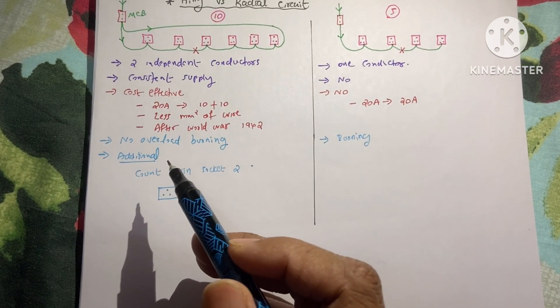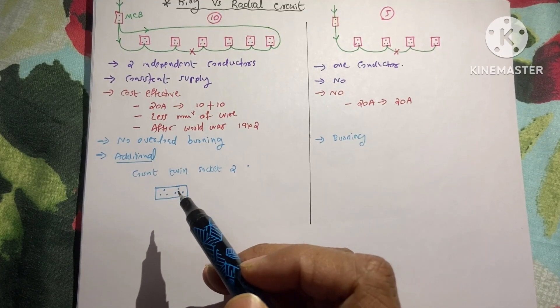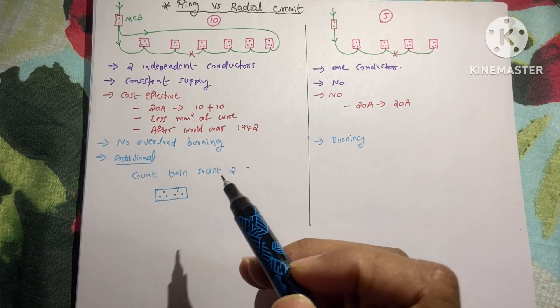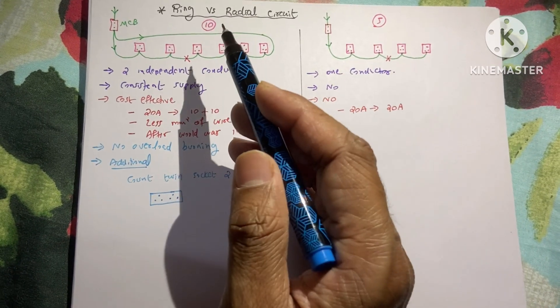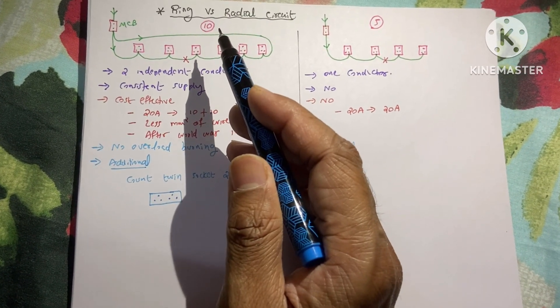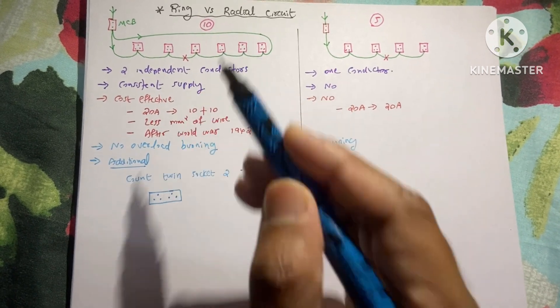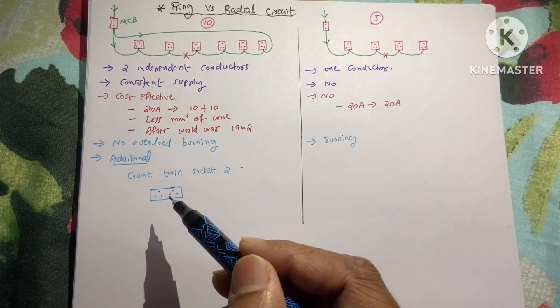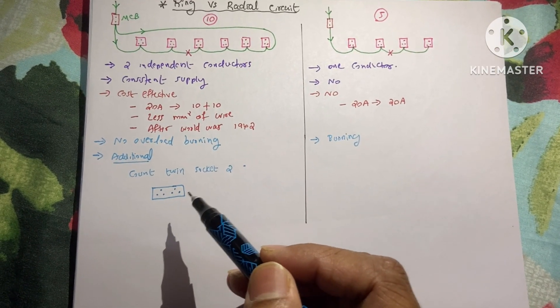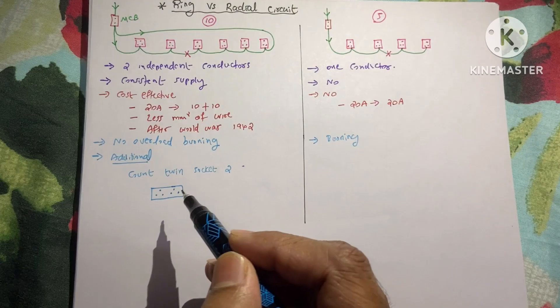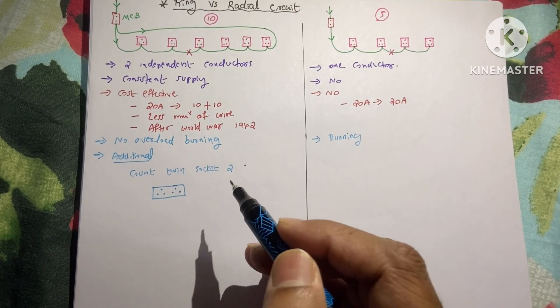And one additional point I want to tell you. In the ring circuit we count a twin socket as two single socket outlets. It means that I already told you in one ring circuit it is allowed maximum 10 number of single socket outlets. So if we have twin socket, one twin socket is two single sockets. So if we have five twin sockets then it will be counted as 10 single socket outlets.